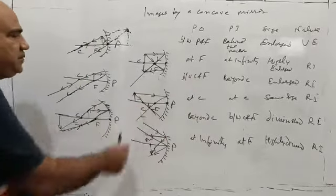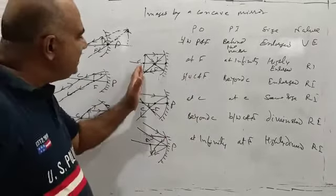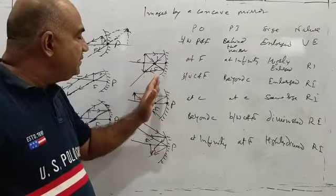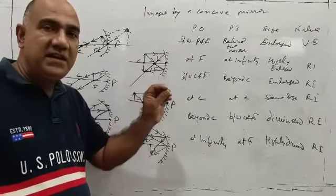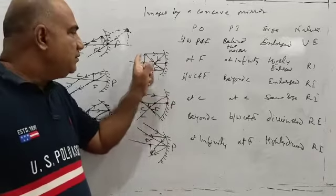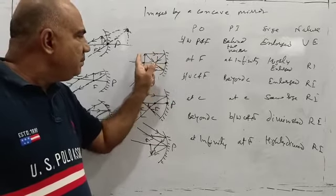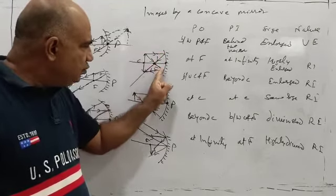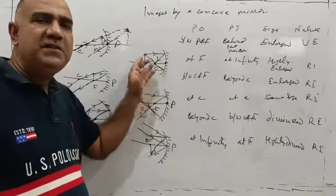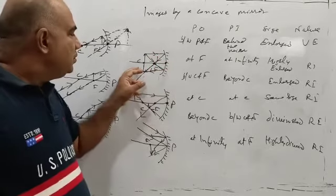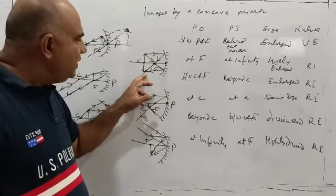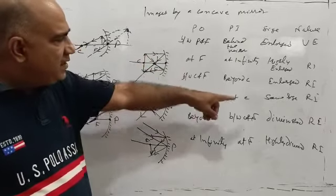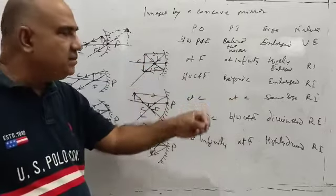For the position when the object is kept at the center of curvature, there is no possibility to send a ray through C, so one ray goes parallel and comes through the principal focus. Another one passes through the principal focus and becomes parallel to the principal axis after reflection. So they meet at C — the image is found at C, and it is exactly the same size as that of the object. The nature is real and inverted.